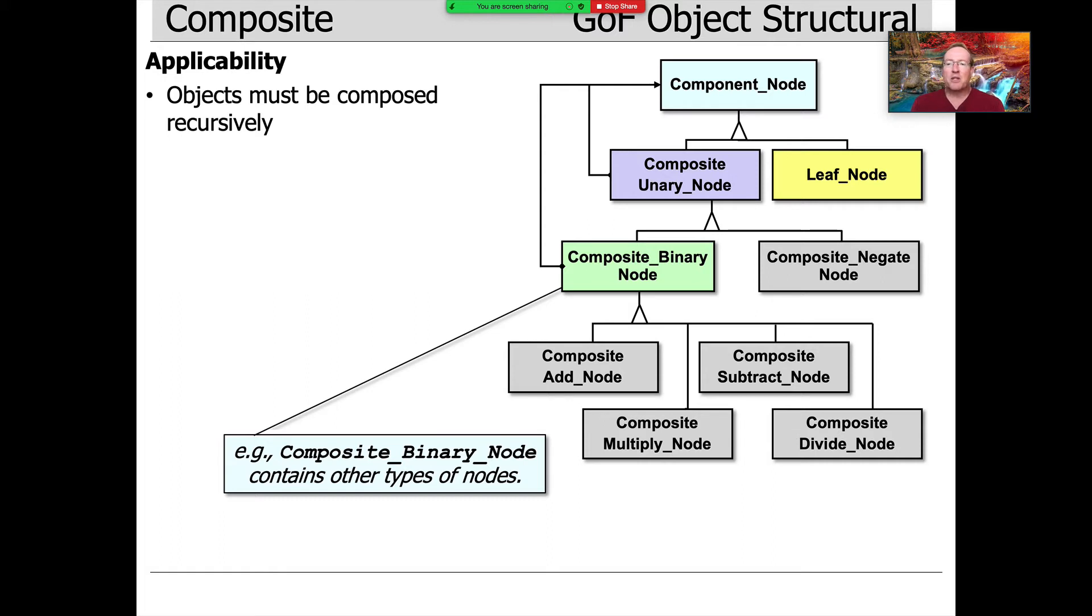One, objects must be composed recursively. So as you can see here, for instance, the composite binary node contains other types of nodes—it contains a left child and a right child, and those left and right children could themselves be composites.